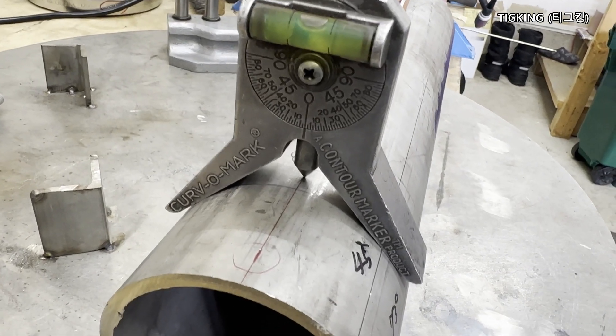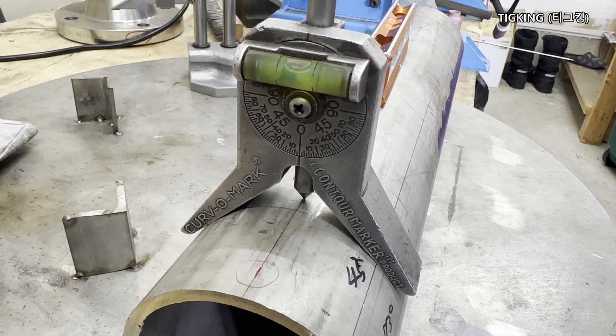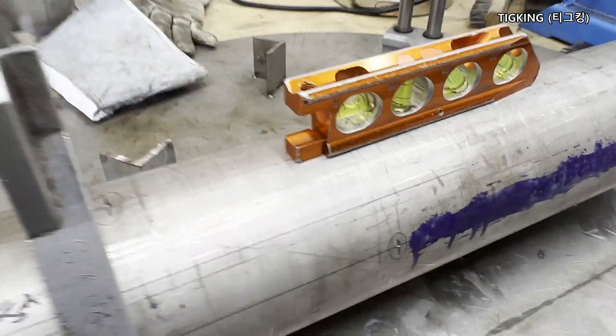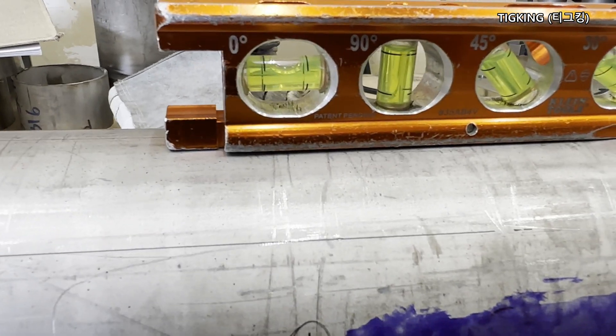What is the first thing to do? You have to make it level. Pipe center line is on the top, and pipe is leveled, so it's good to go.